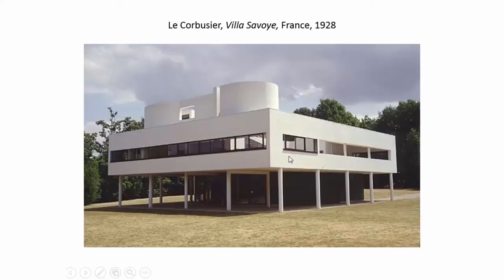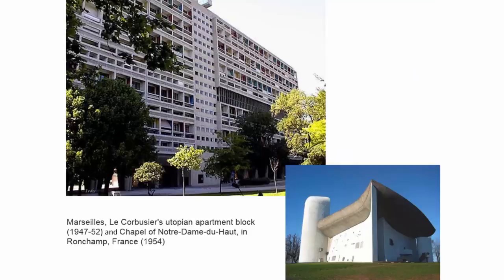In Marseille, Le Corbusier made a utopian apartment block. Utopia is an imaginary place where everything is OK — the sun always shines, everybody's happy. He wanted everybody to be able to live in a nice place with a lot of light. How much do you need? You don't need a mansion, but you need to be comfortable — that was the basic tenet in designing these apartment blocks: they need to give people a happy environment.